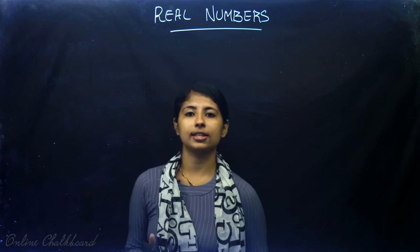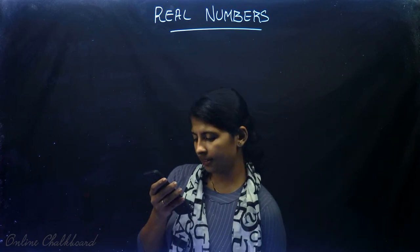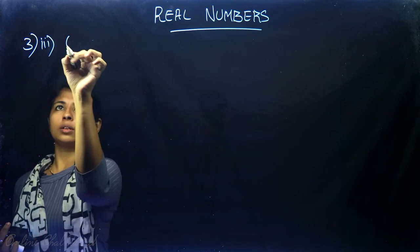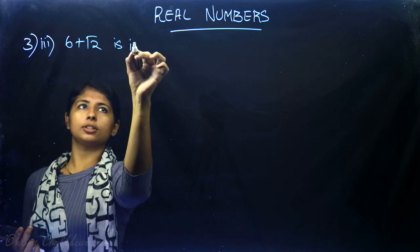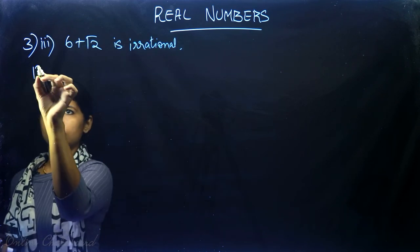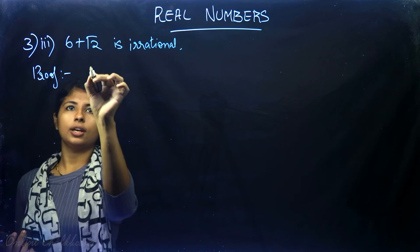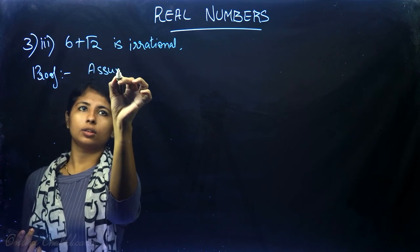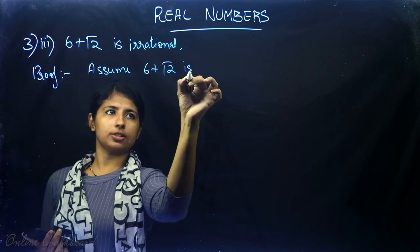Now let's move on to the last question of this exercise: prove that 6 + √2 is irrational. We use the same method — prove by contradiction. Assume that 6 + √2 is rational.